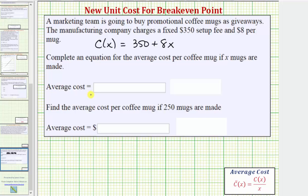And therefore the average cost would be equal to the total cost or C(x) divided by x. So one way to express the average cost function would be the quantity (350 + 8x) all divided by x.